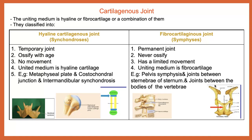Examples of hyaline cartilaginous joints include the metaphyseal plate present at the proximal and distal extremities of the bone, the junction between the ribs and sternum at the costochondral junction, and the intermandibular synchondrosis present at the junction between the two parts of the mandible, as seen in the photo.